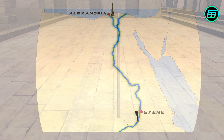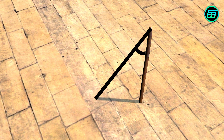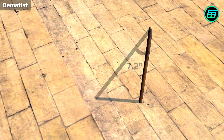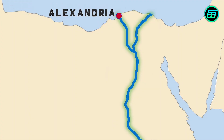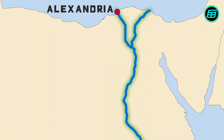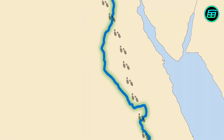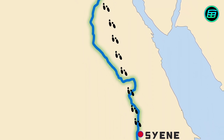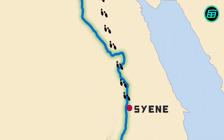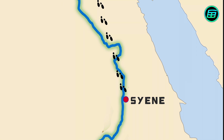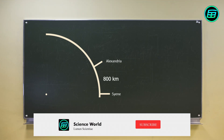He measured the angle between the sun's rays and the stick, and found it to be 7.2 degrees. Then he hired a Bematist, a specialist at measuring distances by counting steps, to determine the distance between Alexandria and Syene. The Bematist walked to Syene and back, and found the distance between the two cities to be 5,000 stadia, which is about 800 kilometers, or 497 miles.